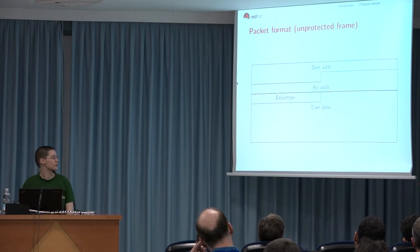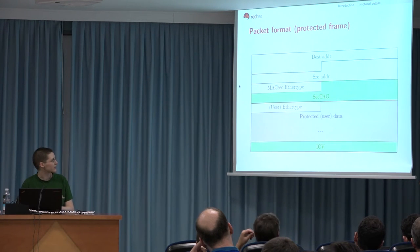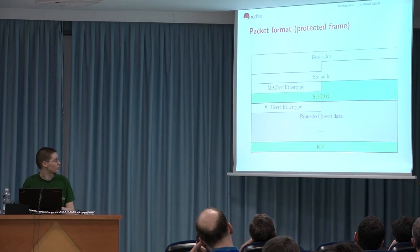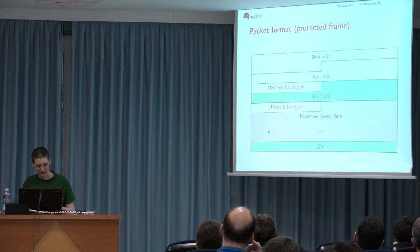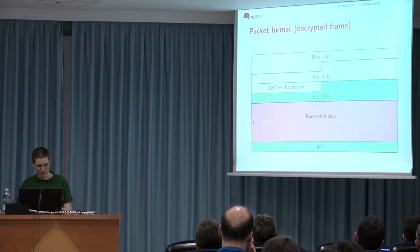A quick look at the packet format for MACsec. Starting with an unprotected frame, when you pass it through a MACsec device, you change the Ethertype to the MACsec Ethertype, add a SecTag which is the MACsec header, and all the original payload starting from the previous Ethertype is protected by MACsec. At the end you add the ICV from the crypto suite. If you decide to encrypt your traffic, everything starting from the original Ethertype is encrypted.